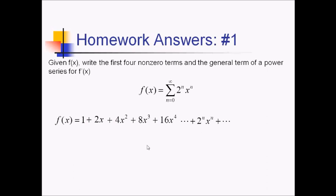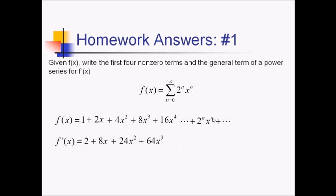Let's go ahead and take that derivative, going left to right. The constant goes away, we have a 2, then we have 8x, 24x squared — just using our power rule here — 64x cubed. And now the general term: we're just going to multiply by n, that's the exponent of x, so that'll be n times 2 to the n times x to the n minus 1.